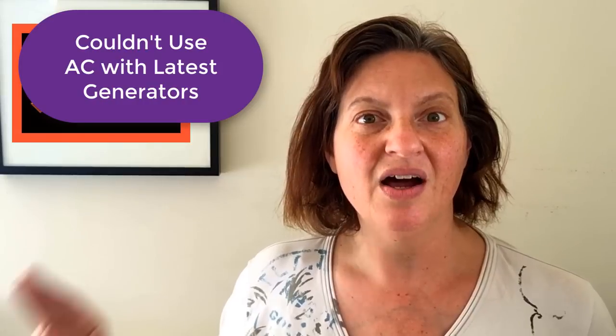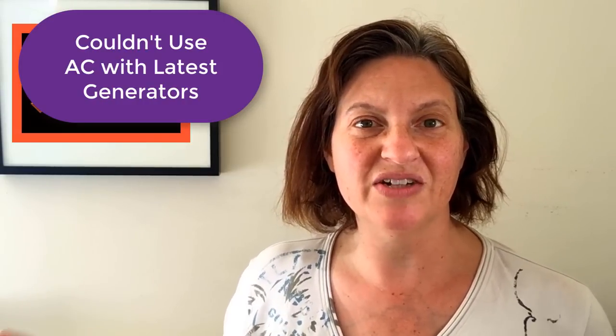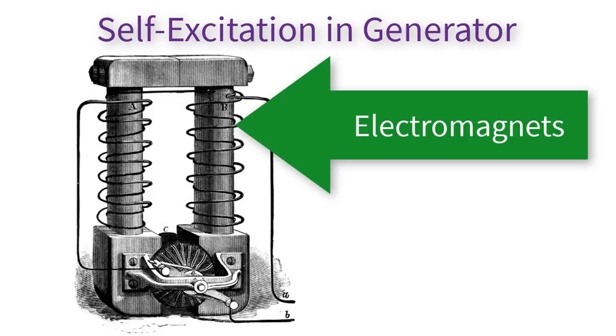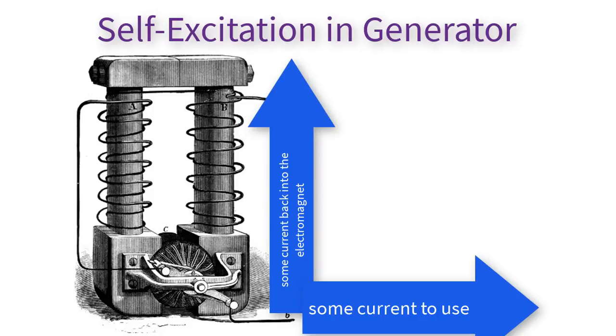Still, most people did not want to use alternating current, for several reasons. One, there was no alternating current motor at the time. Two, alternating current with those high voltages was very dangerous. And three, alternating current could not be used with the most advanced generators at the time. In 1866, at least three people — including a German named Siemens of the Siemens company — discovered generators using self-excitation, rerouting some of the electricity produced to charge up the electromagnet. Before one-way valves or diodes, they couldn't use self-excitation with AC. So most engineers felt that AC was a step backwards, not a step forward.